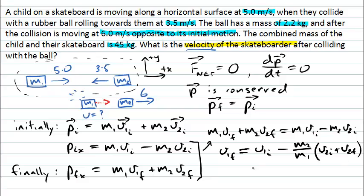And now I can put numbers into this expression where the initial velocity of object 1 was 5, the mass of object 2 was 2.2 kilograms, and the mass of the skateboarder and the skateboard object 1 is 45 kilograms.